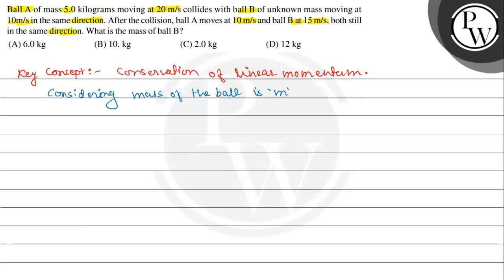Toh initial momentum, agar hum log likhna chahe hai, toh initial momentum Pi, that will be equal to - kya likhenge? Initial momentum hamara paas kya ho jayega? m into v, pehle ball ka mass into velocity - pehle ball ka velocity kitna hai? 20, thik hai? And this will be equal to dusre ball ka mass, hum ne m consider kiya hai, aur iski velocity jo hai woh kitna hai? 10 meter per second, thik?